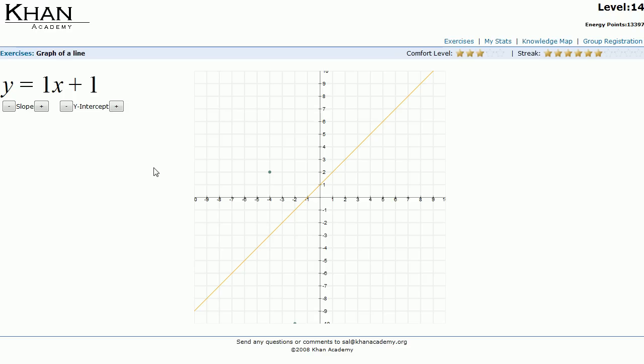On the Khan Academy web app, which I need to work on a little bit more to make it faster, they have this one module called the graph of the line. It has no directions on it, and I thought I would make a little video to explain how to do this module. In the process, I think it'll help people, even those who aren't using the module, understand what the slope and the y-intercept of a line is a little bit better.